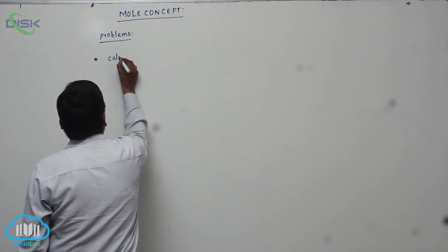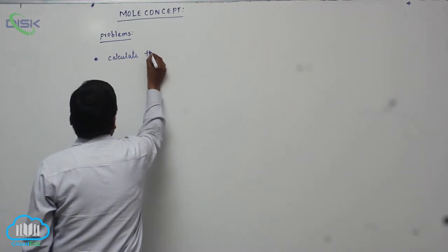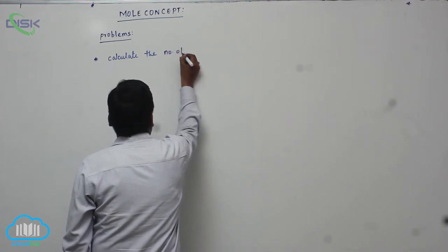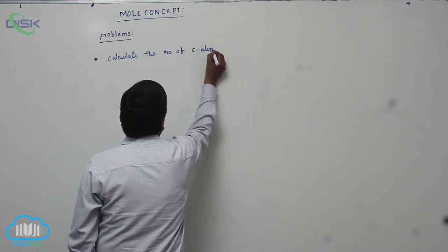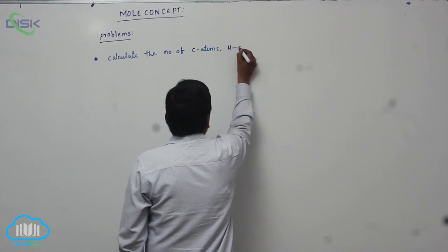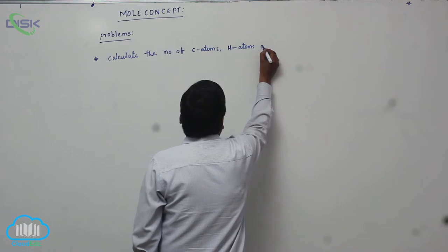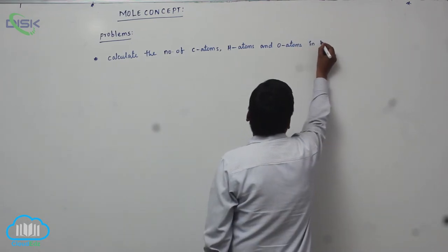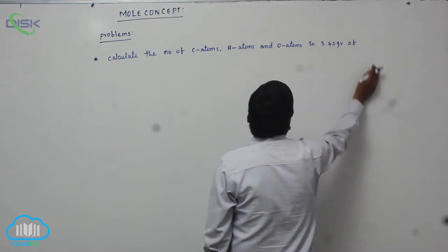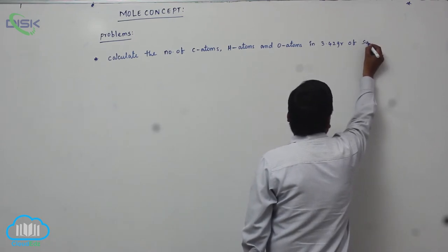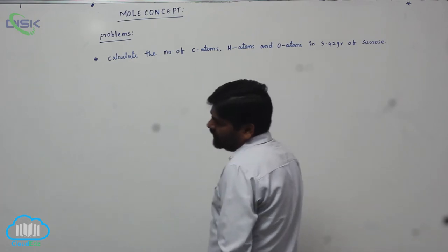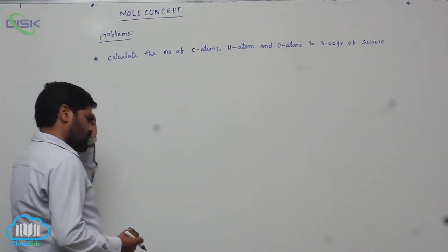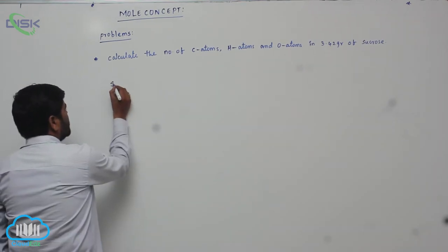Calculate the number of C atoms, H atoms, and O atoms in 3.42 grams of sucrose. Whenever this type of problem is given, first we calculate the number of moles. So, solution here: